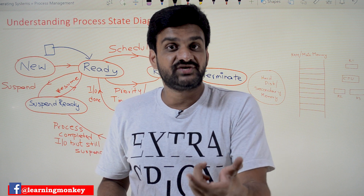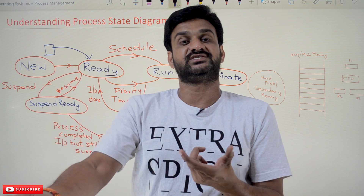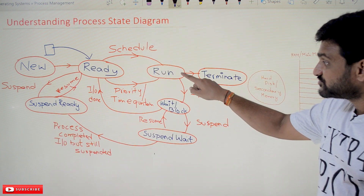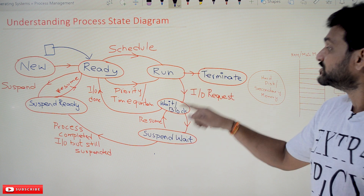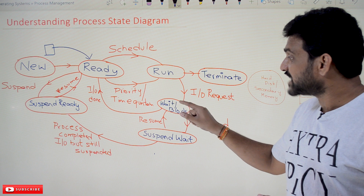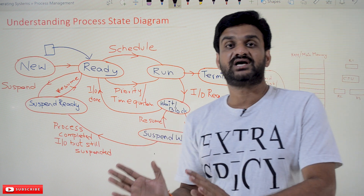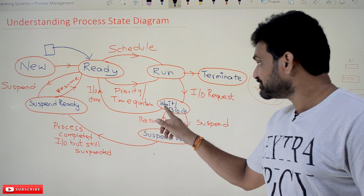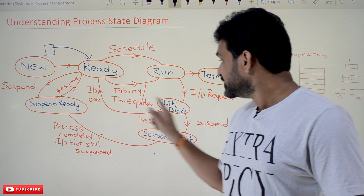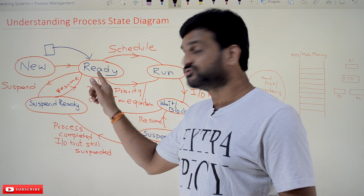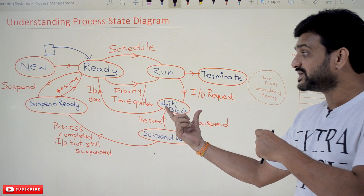There is another state: whenever the process is getting executed and in between there is an IO request — if an instruction is asking for an IO operation — then that process will be shifted to the wait or block state, which is still in the RAM itself. Now it is waiting for its IO operation to complete. Once the IO is completed, that process will be shifted back to the ready state.